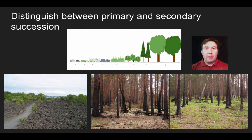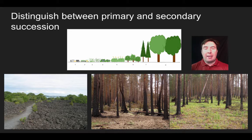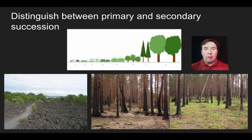The first thing we're going to talk about is the idea of primary and secondary succession. Before I get into the difference between the two, let's talk about the concept of succession. Succession is the idea that over time, the organisms that live in a given area are going to change and alter the conditions of that ecosystem, and as a result, they're going to prepare it so that other organisms will be able to follow up and move in and take advantage of the conditions that are present.